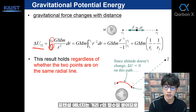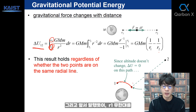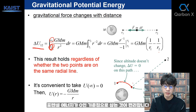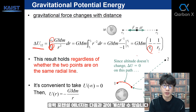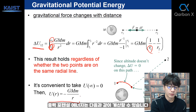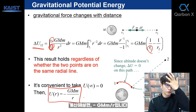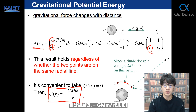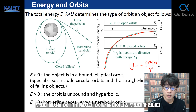Regardless of which two points share the same r, potential energy doesn't change, because potential energy is only a function of the radial distance r. It's convenient to take the reference point at infinity, where r1 is infinite and potential energy is zero. So gravitational potential energy is calculated as minus GMm over r between two masses. This is the gravitational potential energy curve: U equals minus GMm over r.